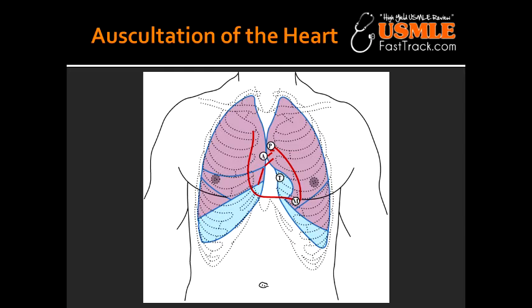What type of murmur can be heard at the pulmonary area? At the pulmonary area you could hear a systolic ejection murmur. This can happen due to pulmonary stenosis, flow murmur caused by atrial septal defect, or patent ductus arteriosus.